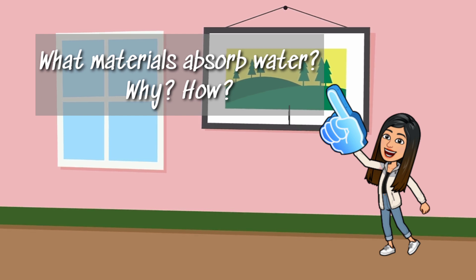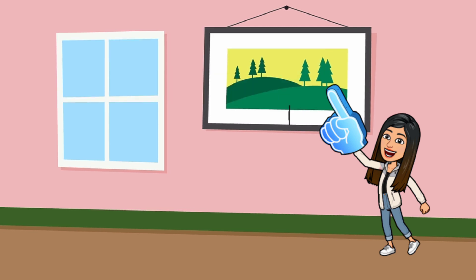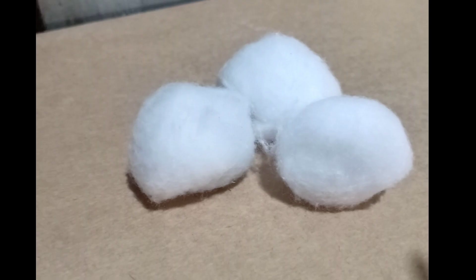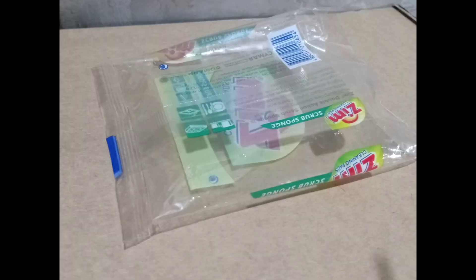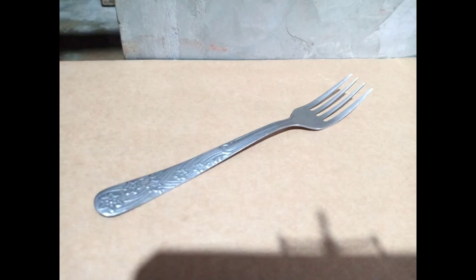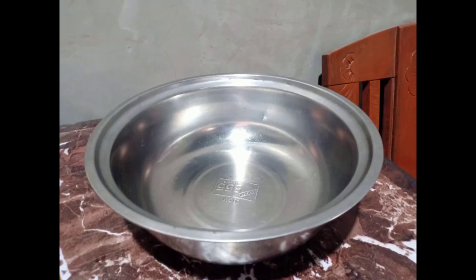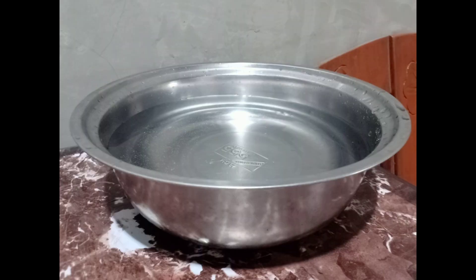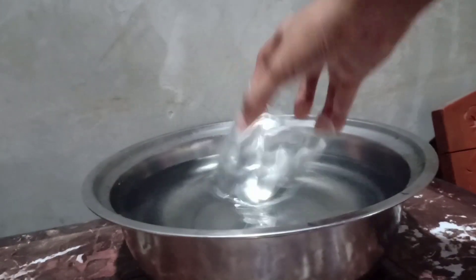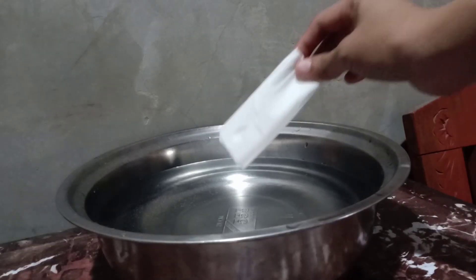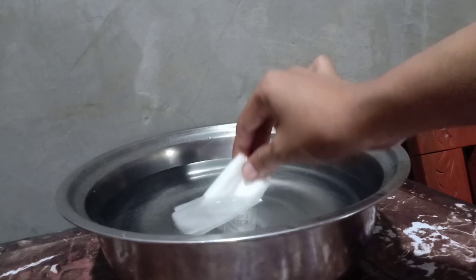In this experiment, we will be using materials which are available at home: cotton, glass, tissue, plastic wrapper, face towel, metal fork, sponge, an empty basin, and a basin of water. We will be dipping the materials in the basin of water, and we will pass them over to the empty basin to see which one absorbed water.